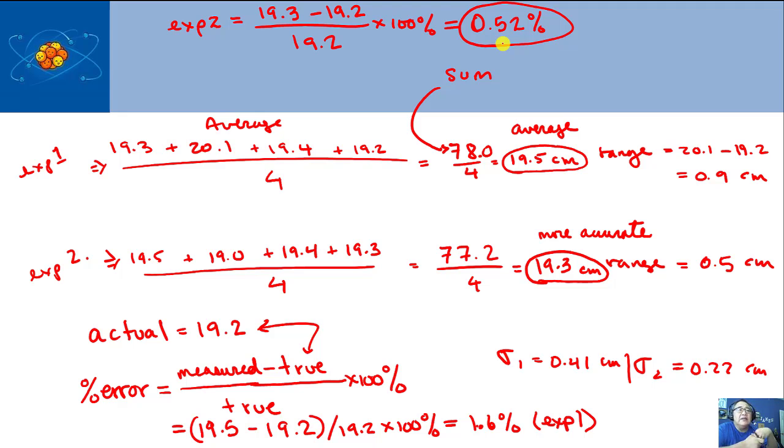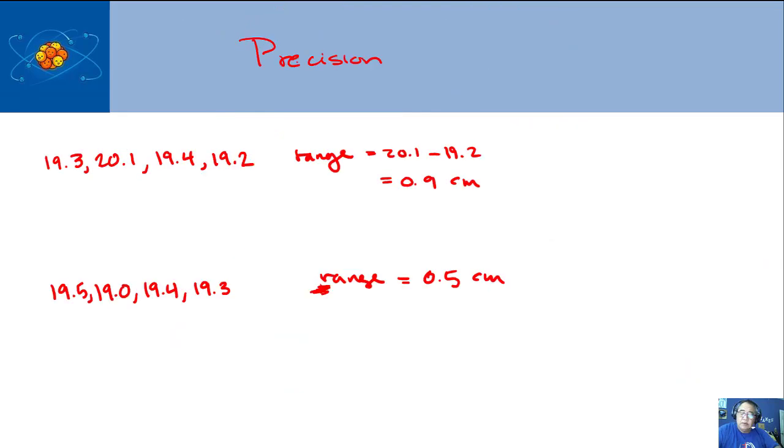That's one aspect, the accuracy, how close it is to the actual value. The other idea is called precision. I've recopied the numbers here from the original data. This is experiment one or student one, and this is experiment two. If you want to know the precision, you need to see how close the numbers are together. Measuring the closeness gives you an idea how precise and repeatable they are.